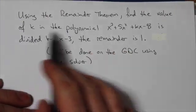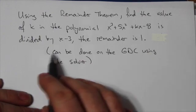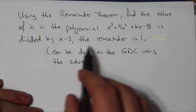So using the remainder theorem, find the value of k in the polynomial x³+5x²+kx-8 when the polynomial is divided by x-3 and the remainder is 1.